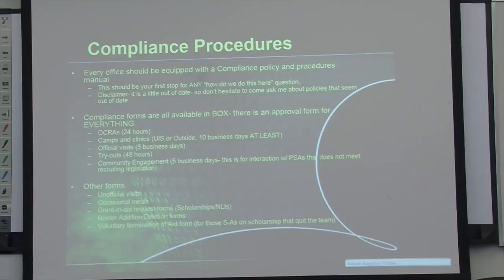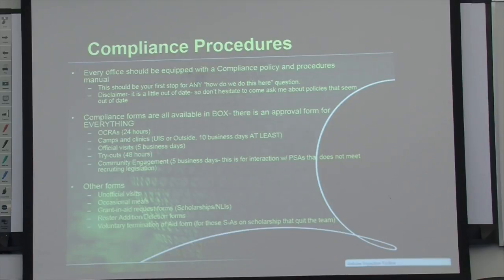Other forms include unofficial visits, occasional meal forms, and grant and aid requests — which is how you increase or lower someone's scholarship or do a new scholarship. Also roster addition and deletion forms, and the voluntary termination of aid form, which applies to a scholarship athlete who quits the team and voluntarily gives up their scholarship.